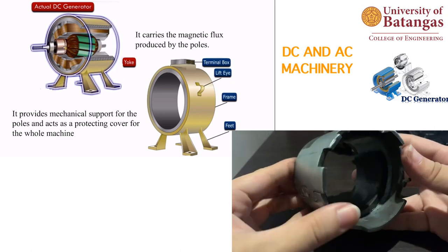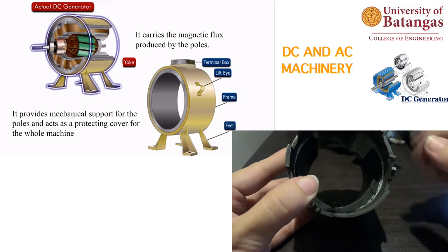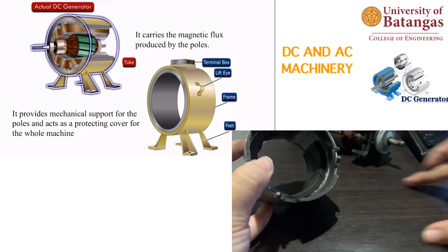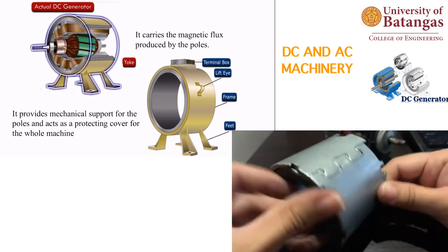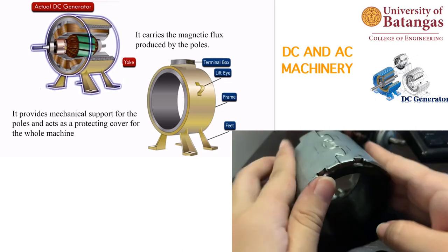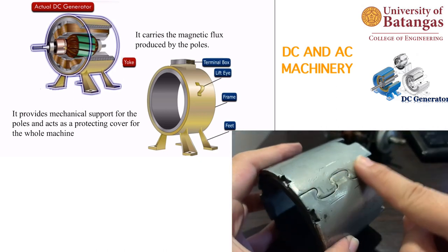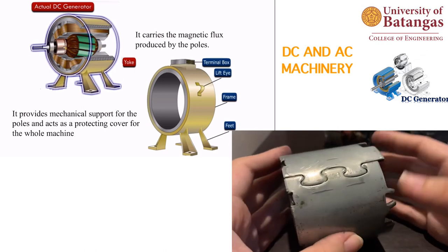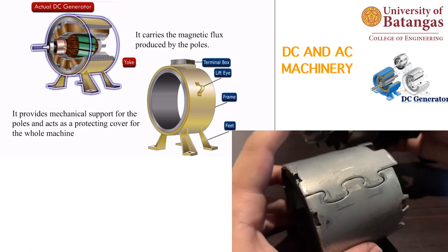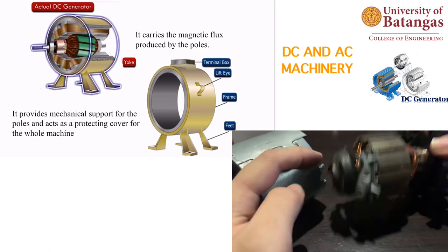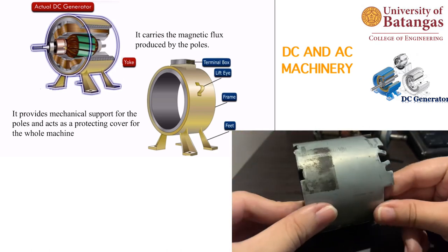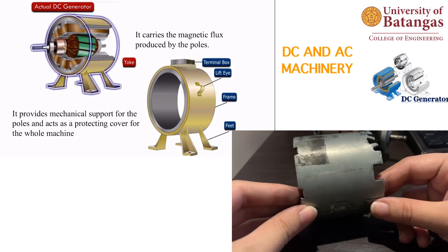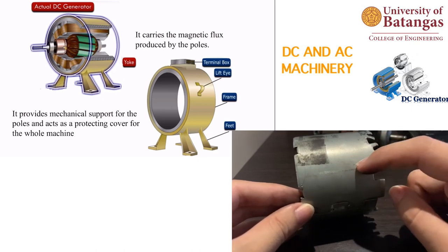Steel is more expensive but more durable compared to iron. If we want to save cost, we use iron for the yoke material. Also included in the yoke is the terminal box where the electrical supply connections are housed.